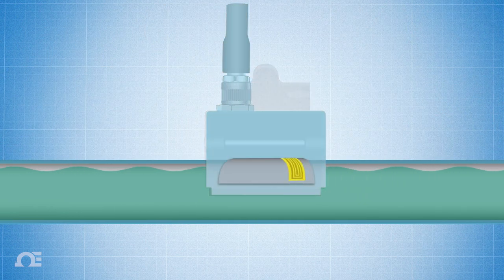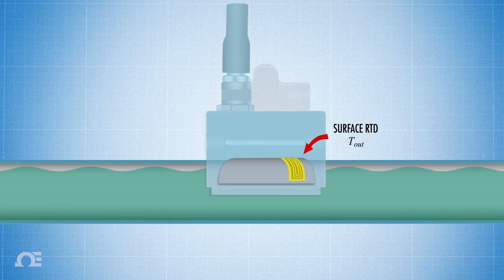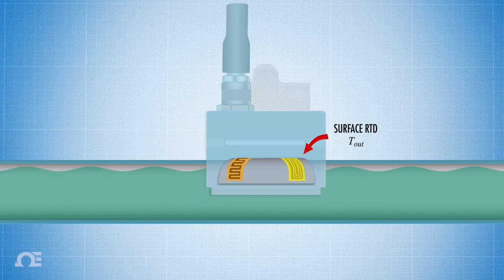So, if we put an RTD on the outside of the pipe, much like a surface sensor, we'll call that T out. And then we also attach a heat flux sensor that will detect the amount of heat loss from the inside to the outside of the pipe, which represents Q.